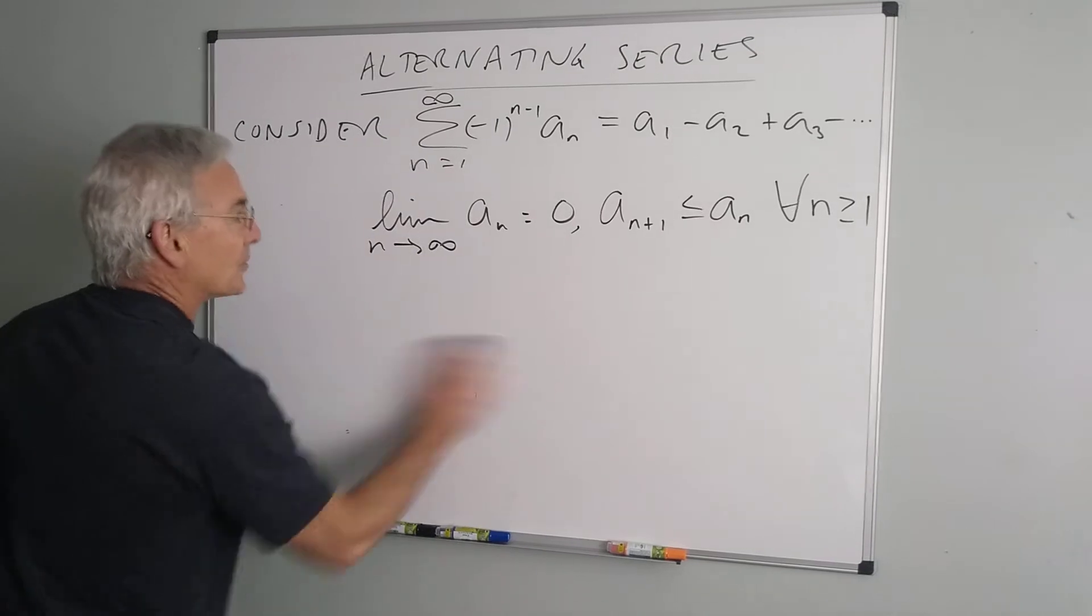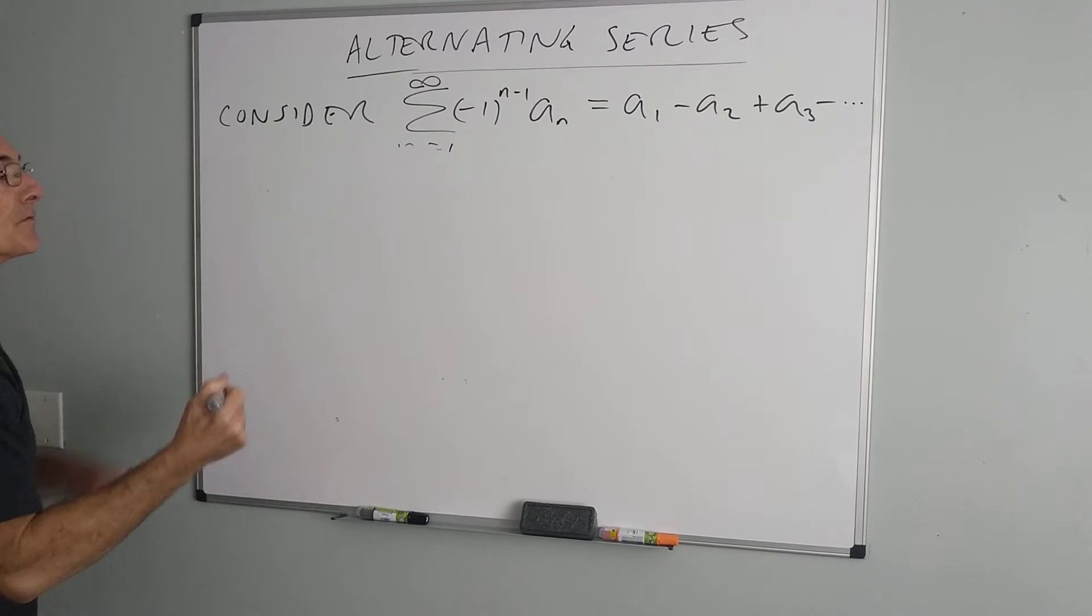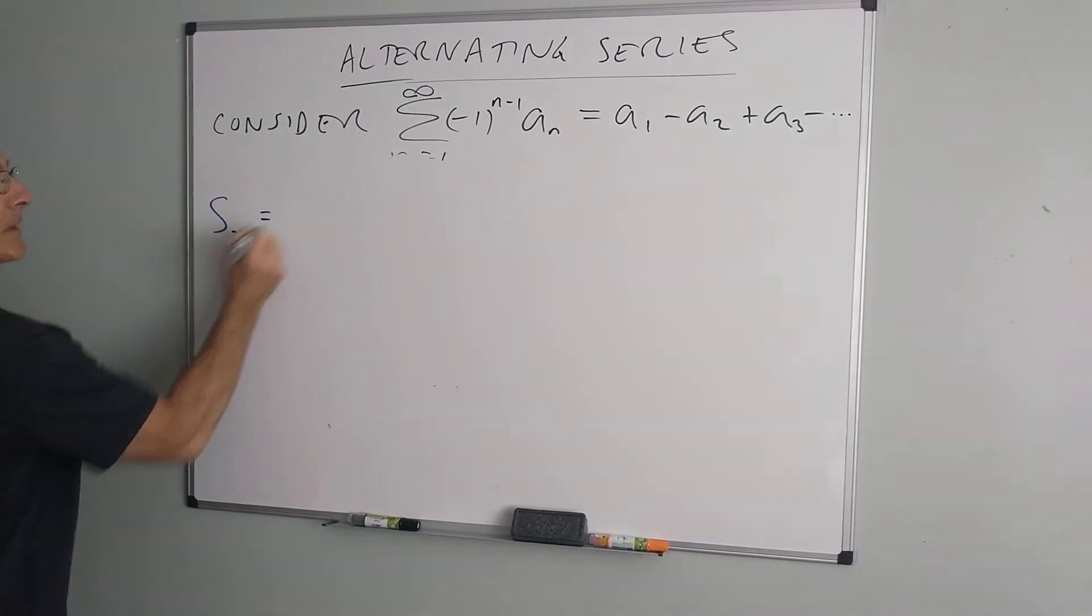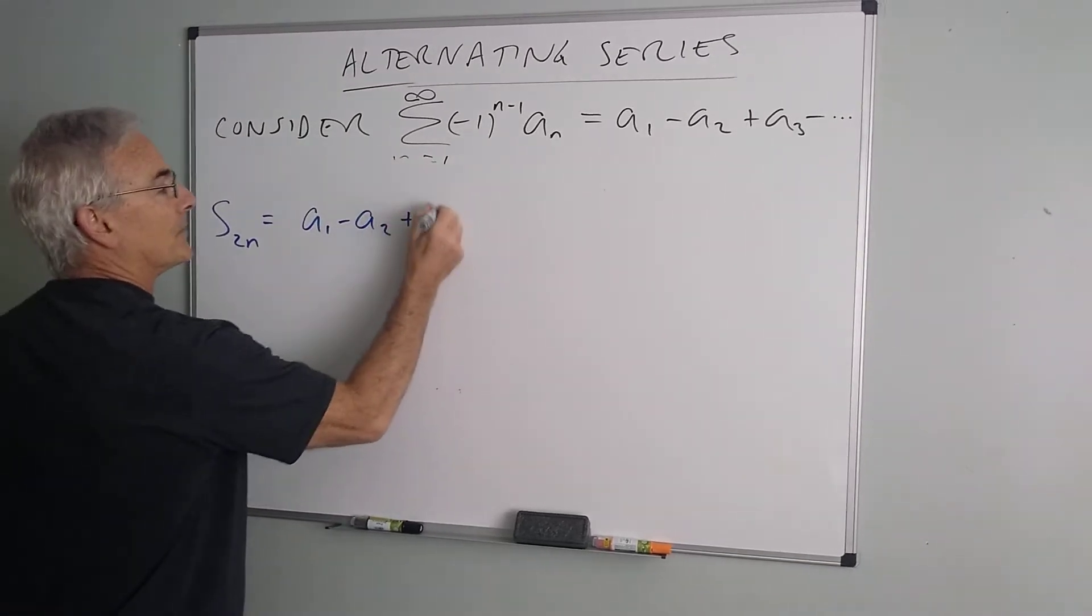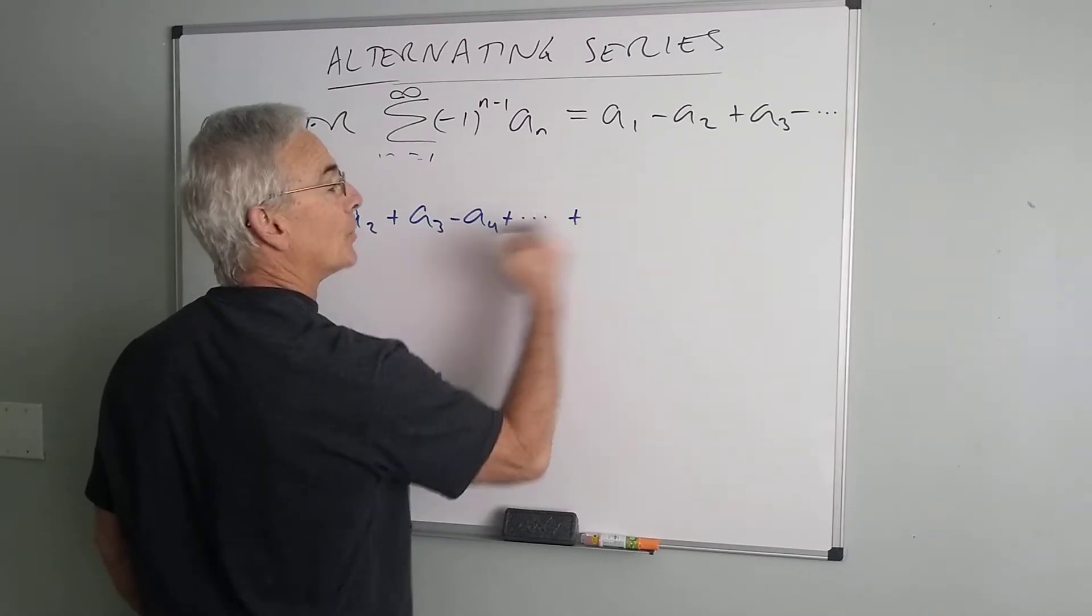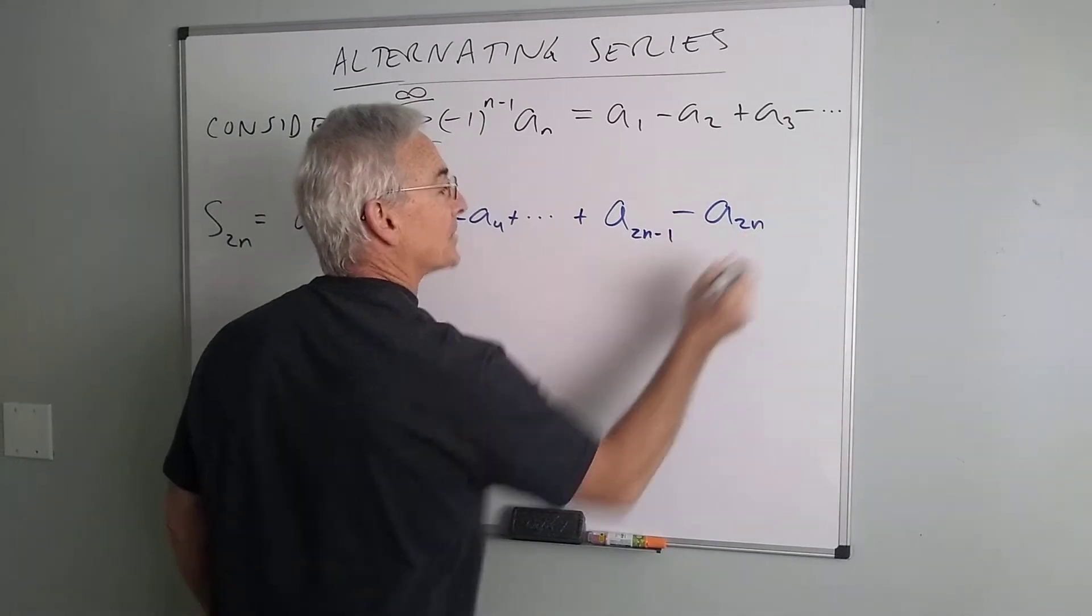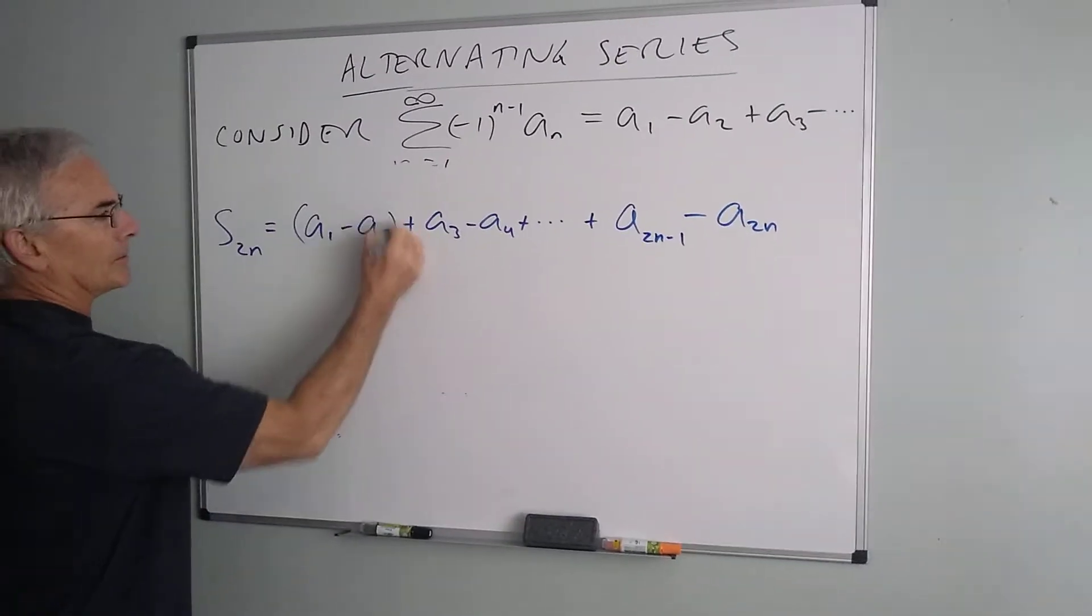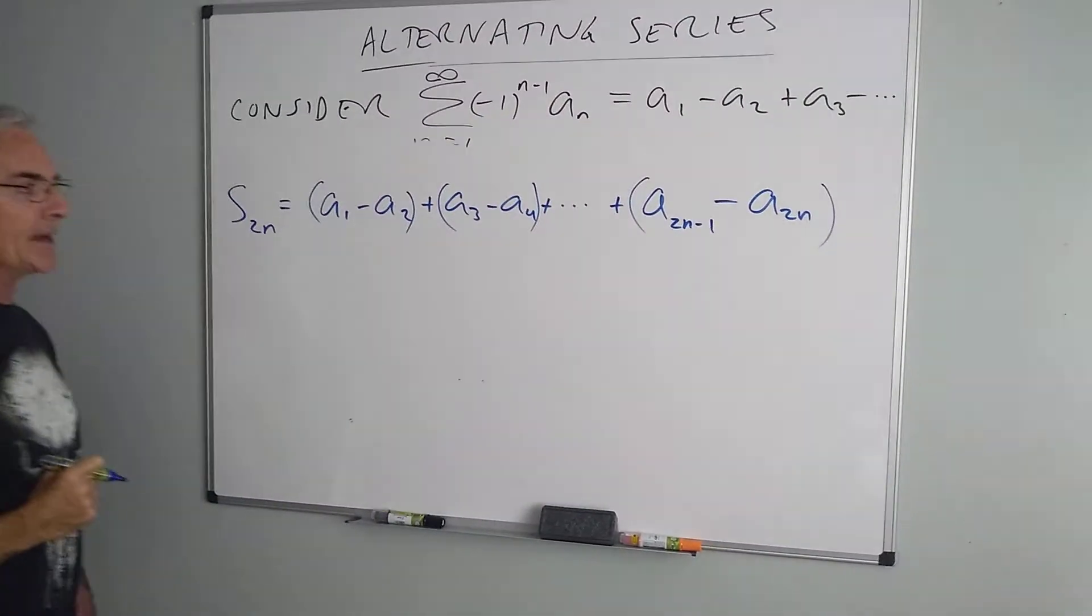So let's start by considering the sum of the first two n terms. So I'm starting with a1 minus a2, and then a3 minus a4. As I continue, the last two of this would be a2n minus 1 minus a2n. So if I think about grouping these in pairs, I have this finite total.